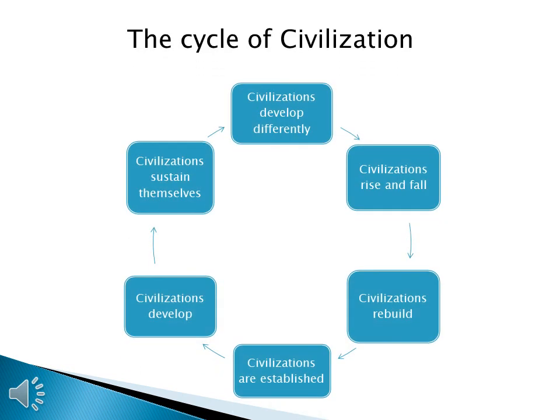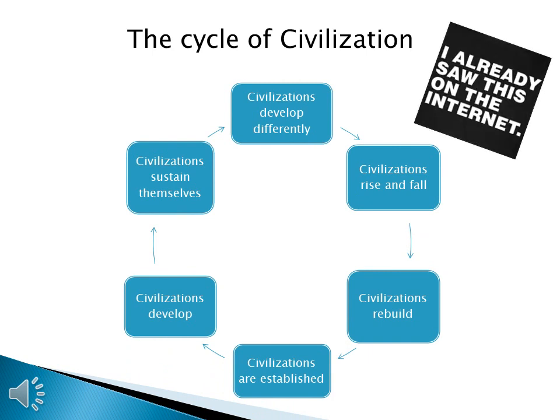Welcome to World History 1 Lecture 2.2 on the geography of Mesopotamian civilization. Once again, we are looking at the cycle of civilization. You may be wondering why we're looking at this again — last lecture we looked at how the entire cycle of civilization works, from how civilizations are established through to how civilizations rebuild after they rise and fall. Today, we start looking at one specific part of this cycle: how civilizations are established.